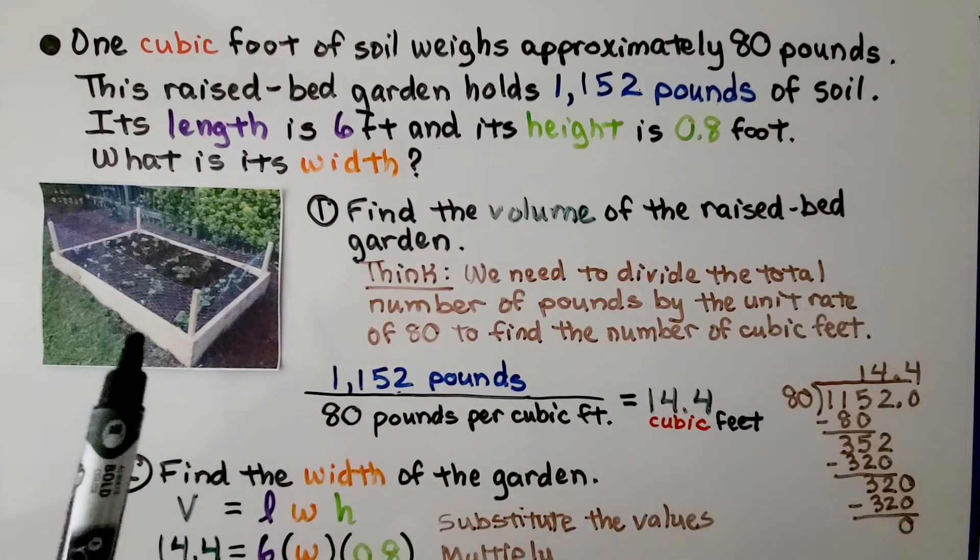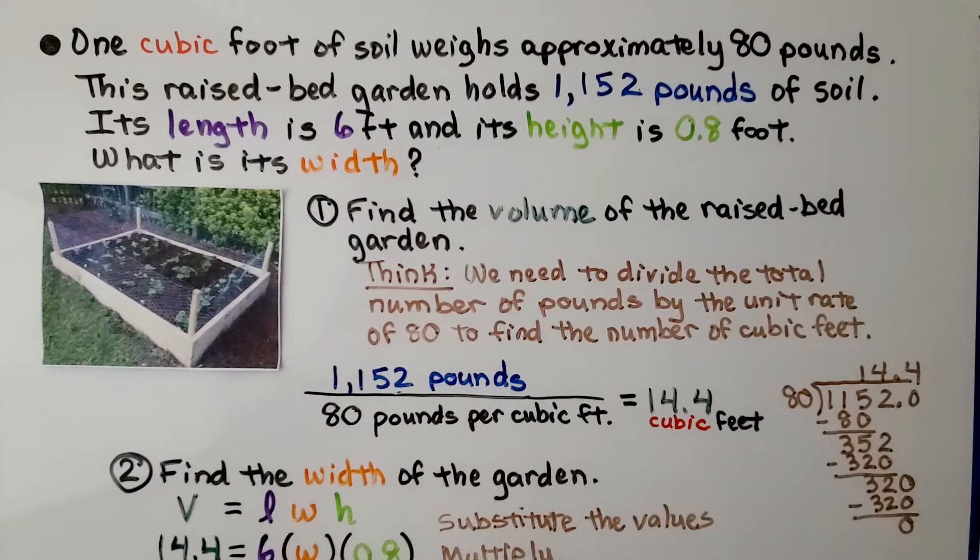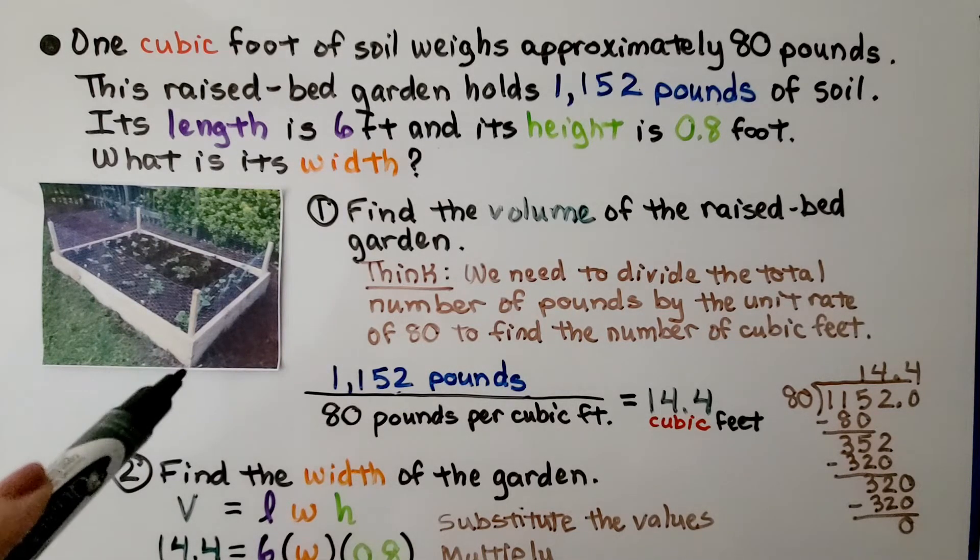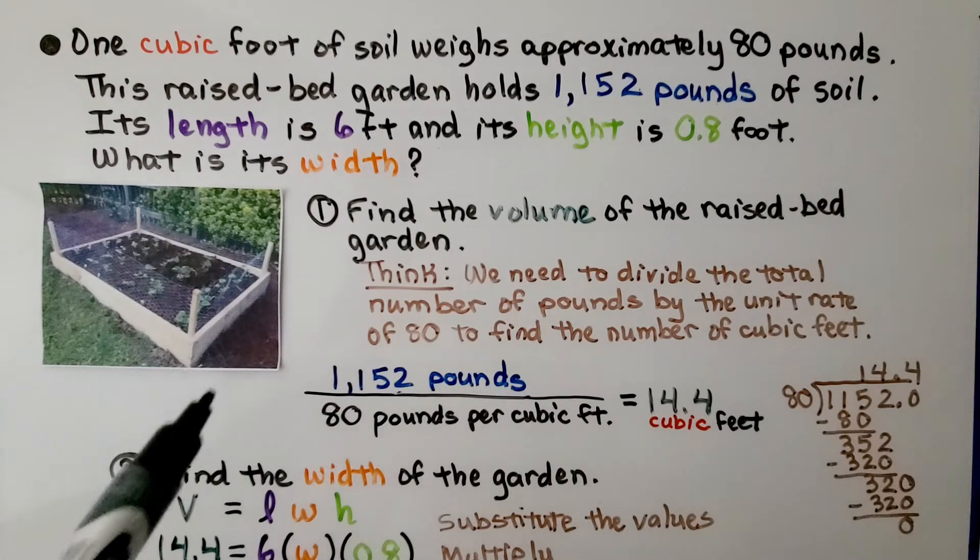This is a raised bed garden. And it's telling us 1 cubic foot of soil weighs approximately 80 pounds. This raised bed garden holds 1,152 pounds of soil. It's length is 6 feet. It's height is 8 tenths of a foot. What is its width?